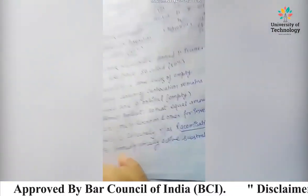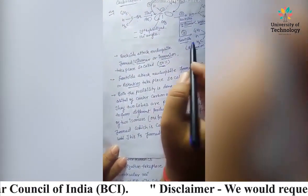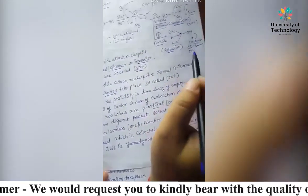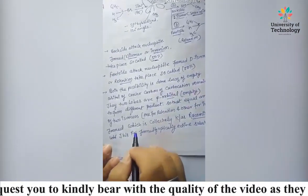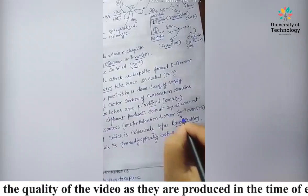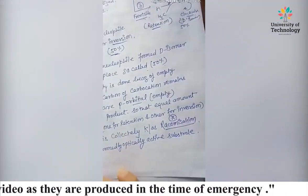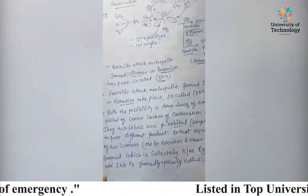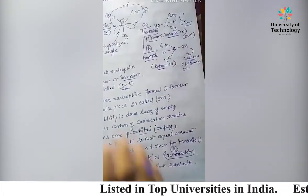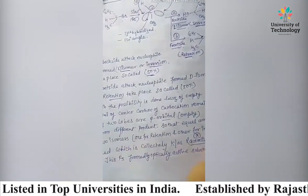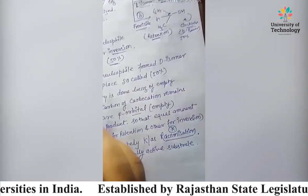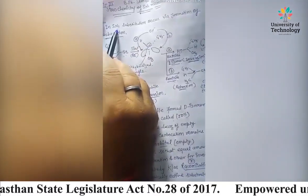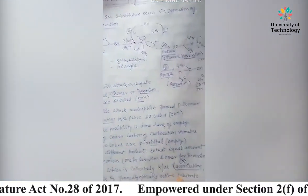Equal amounts of both isomers are formed: one is the L-isomer and the second one is the D-isomer. This is collectively known as racemization, formed from an optically active substrate. Racemization is one of the key characteristics of the SN1 reaction.